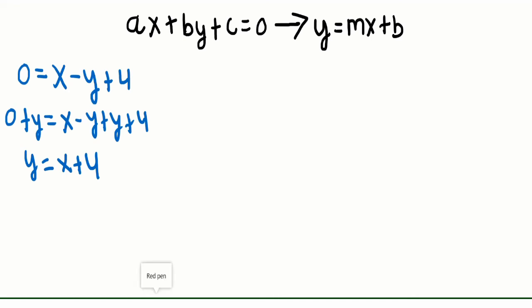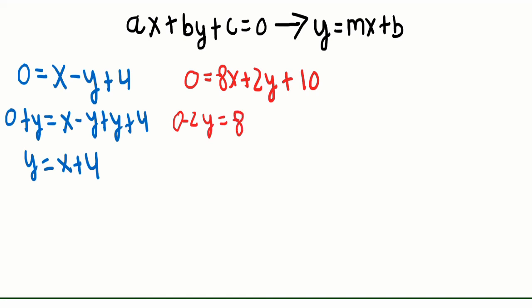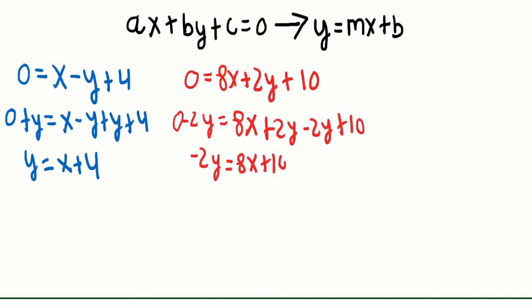Our next equation is 0 equals 8X plus 2Y plus 10. Again, we have to isolate our Y term. Since we're adding 2Y, we subtract 2Y on both sides: 0 minus 2Y equals 8X plus 2Y minus 2Y plus 10, which gives us negative 2Y equals 8X plus 10. In this example, we have a coefficient of negative 2 on Y, not 1, so we need to divide both sides to get a single Y term.